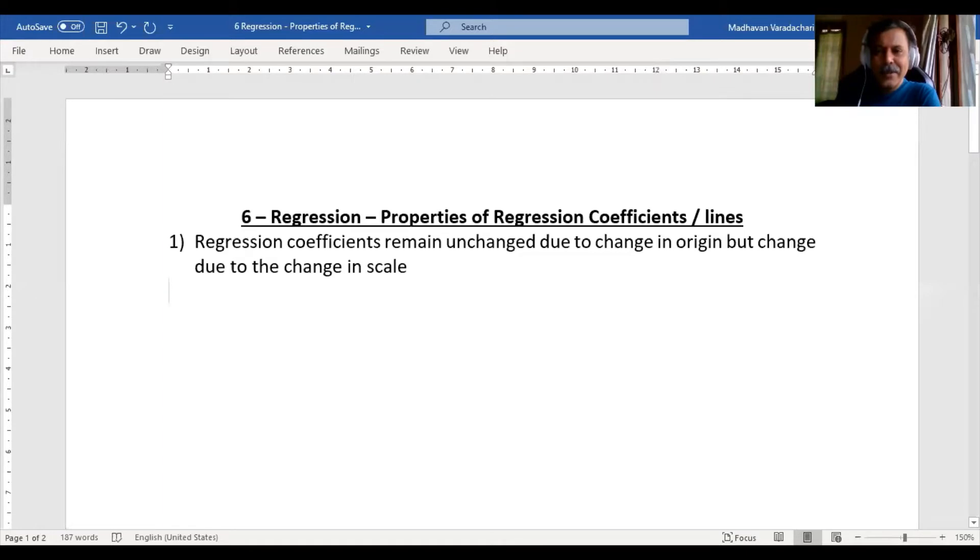Hello everyone, in this video we will see the properties of regression coefficients and regression lines. What are the different properties? The first property is: regression coefficients remain unchanged due to change in origin but change due to change in scale.